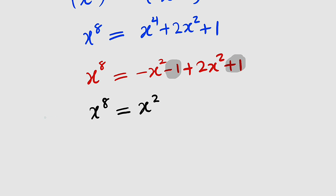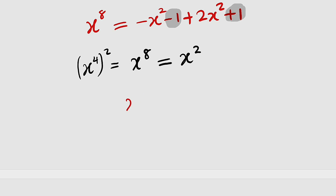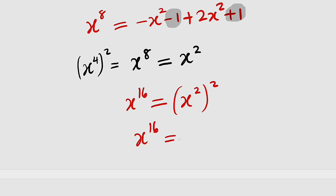And remember that this is x to the power of 4 all squared, which we will use in a moment. Now, to obtain x to the power of 16, we can square this equation as well. x to the power of 16 equals x squared also squared, which gives us x to the power of 4.